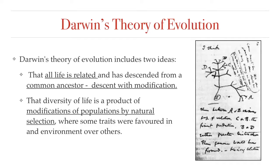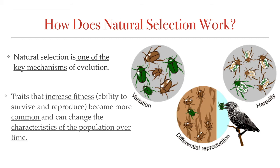As described in On the Origin of Species, Darwin's theory of evolution included two ideas: descent with modification — the idea that species change over time, give rise to new species, and share a common ancestor — and that the diversity of life is a product of modifications of populations through natural selection, where some traits are favored in an environment over others. Natural selection is one of the key mechanisms of evolution and can occur in a population if there is variation, differential reproduction, and heredity. Traits that increase fitness — the ability to survive and reproduce — become more common and change the characteristics of a population over time.